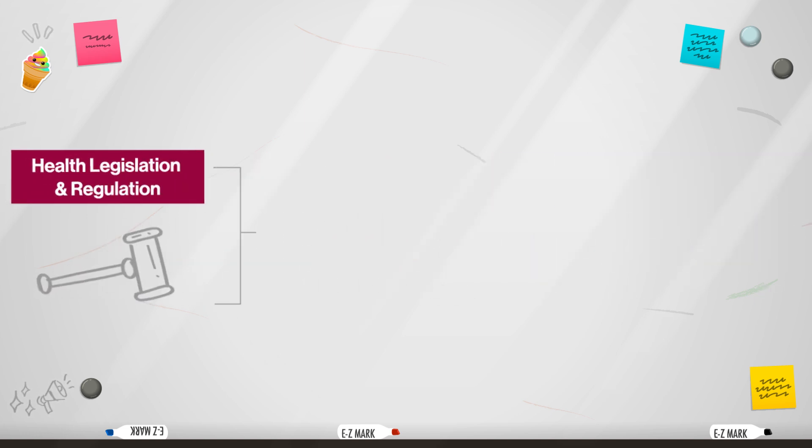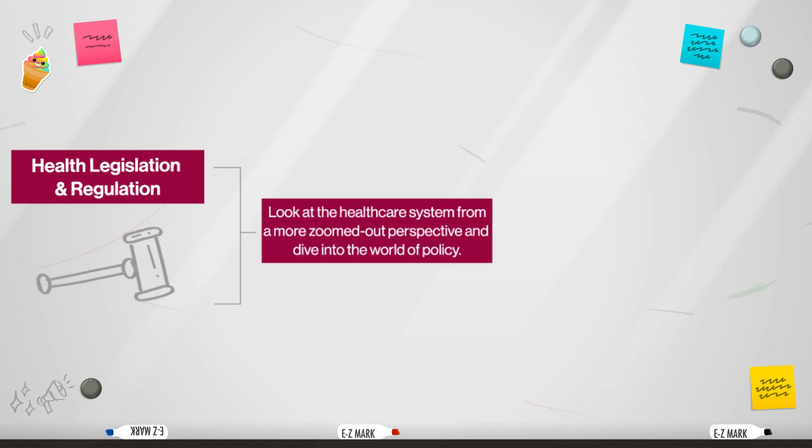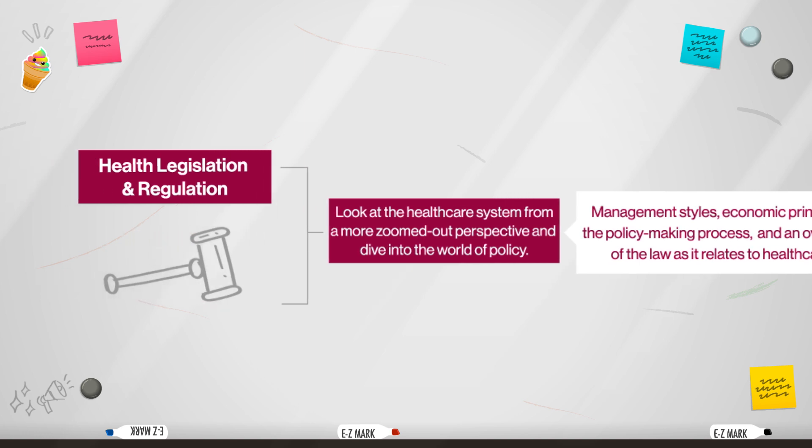In the health legislation and regulation track, you will look at the healthcare system from a more zoomed-out perspective and dive into the world of policy. You'll learn management styles, economic principles, and the policy-making process, and an overview of the law as it relates to healthcare. This is a great choice for anyone looking to get involved in the medical industry on a higher level, to advocate for patients, like taking on a government position.